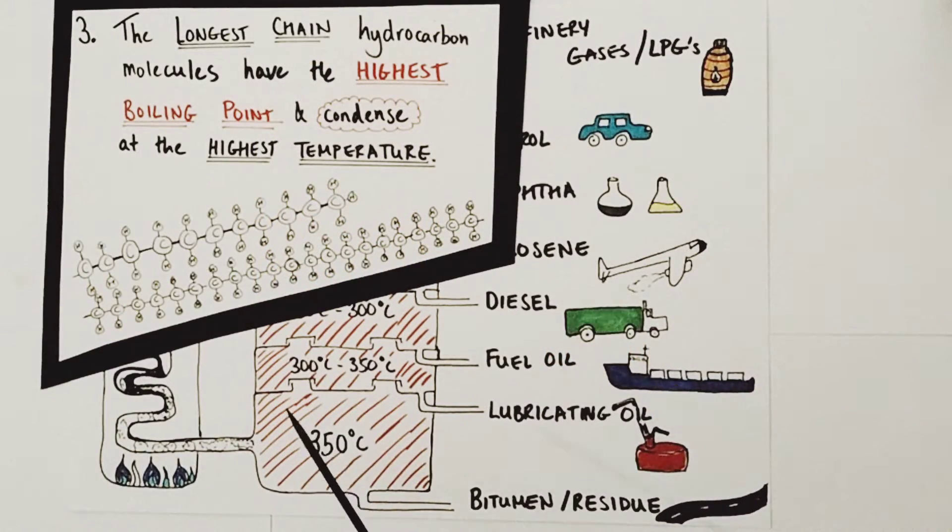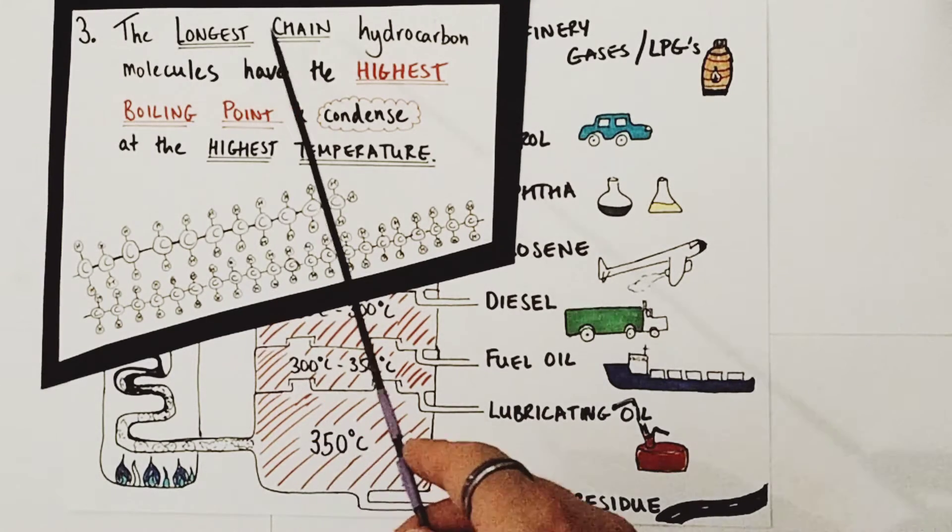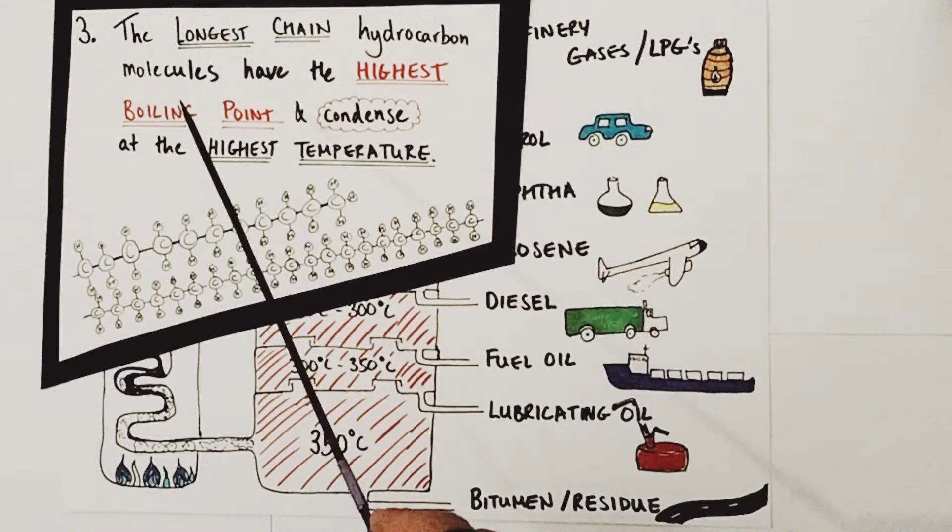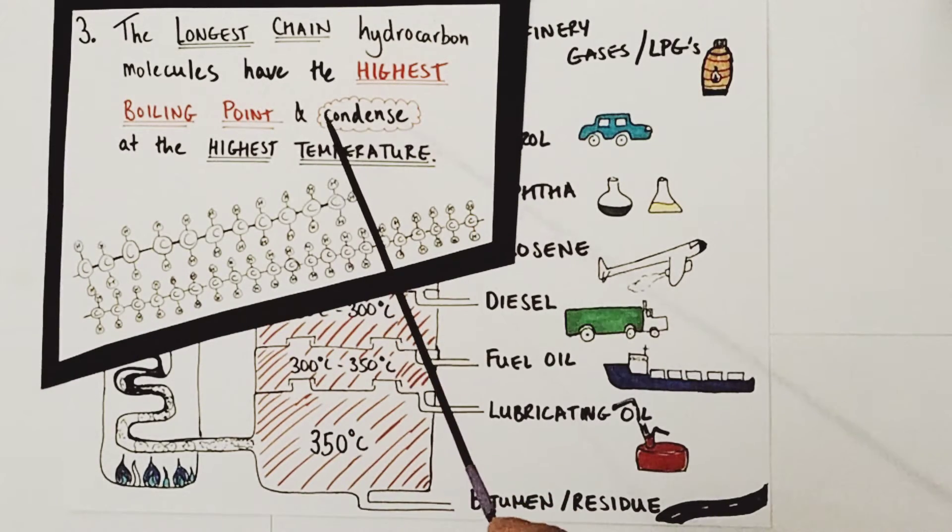At the bottom of the column where the highest temperatures are maintained, the longest chain hydrocarbon molecules, which have the highest boiling points, will condense at those high temperatures and be collected separately. The shorter hydrocarbon molecules won't condense at those temperatures because they have lower boiling points, and will rise as gases up the column to the cooler areas.